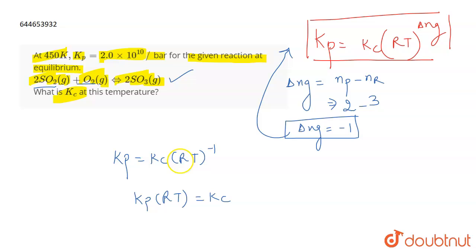Because RT inverse means 1/RT. So to find Kc, this becomes Kp × R × T. Kp is 2×10^10 per bar. The value of R when the units are bar is taken as 0.083.